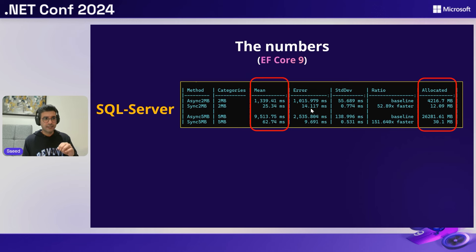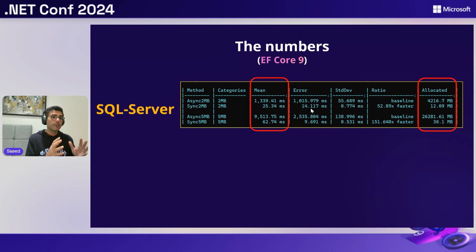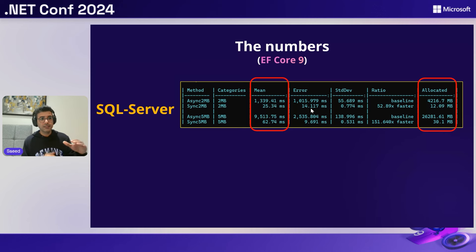More importantly, look at the memory allocation — I care about this even more. Performance and query speed matter, but memory allocation is more important for us as backend developers. It's going to use a lot of memory, which translates to costs in your cloud provider. As you can see, memory allocation is much higher for the async operation.